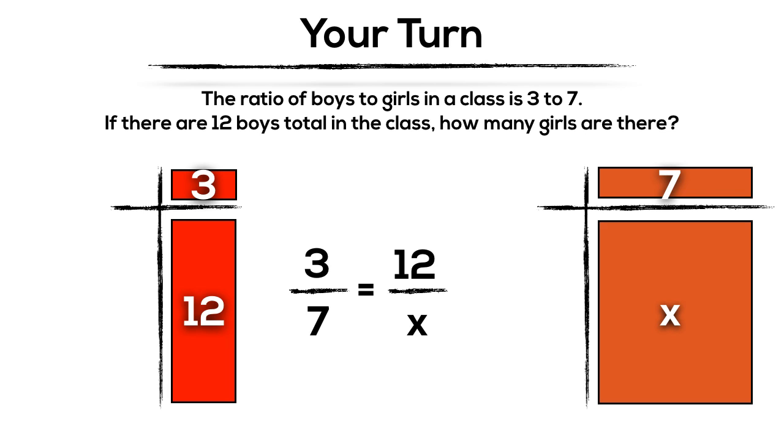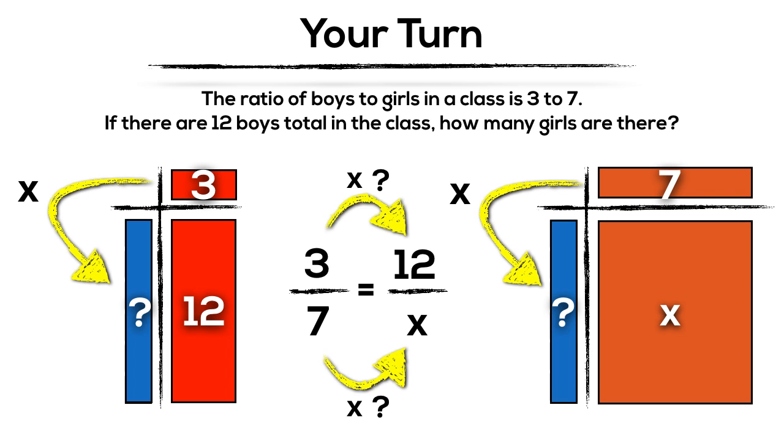So ultimately what we're looking to find is the factors or the missing factors, which will be constant since we're dealing with a proportional relationship.